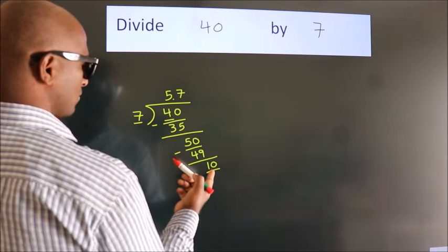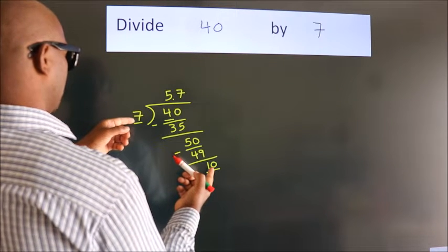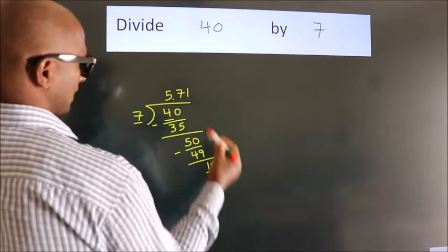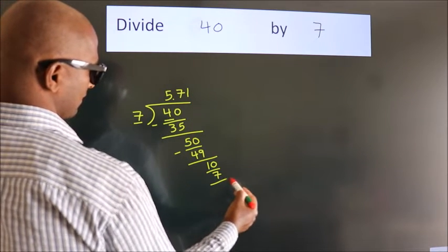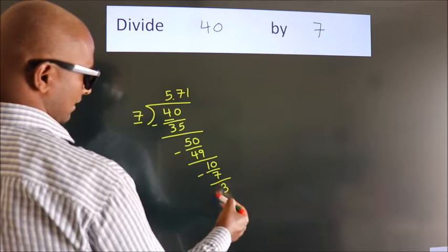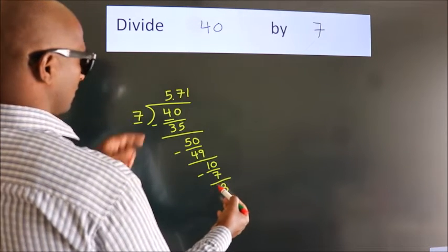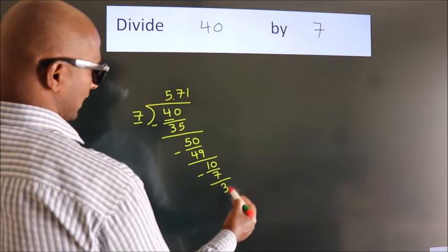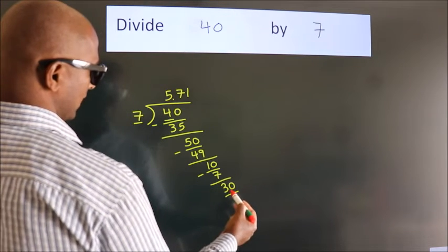A number close to 30 in the 7 table is 7 ones, 7. Now we subtract and get 3. After this, we already have the decimal, so directly take 0, giving us 30.